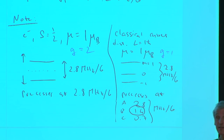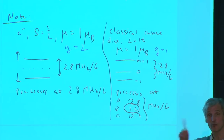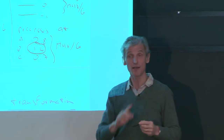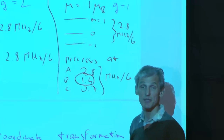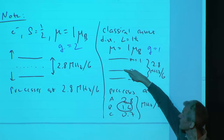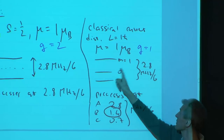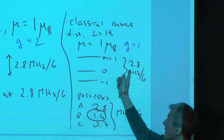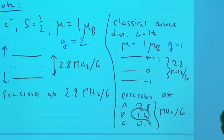An intuitive explanation: the frequency observed as a precession frequency in the laboratory is the beat frequency between two neighboring levels. Here you have a level in between, so the beat frequency between two neighboring levels is 1.4 megahertz, and here the beat frequency is 2.8 megahertz.